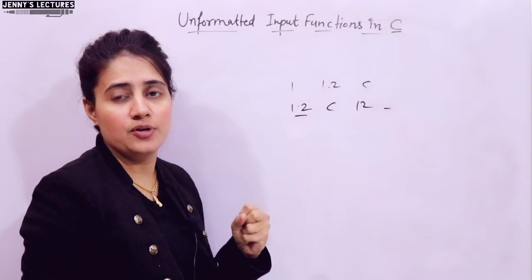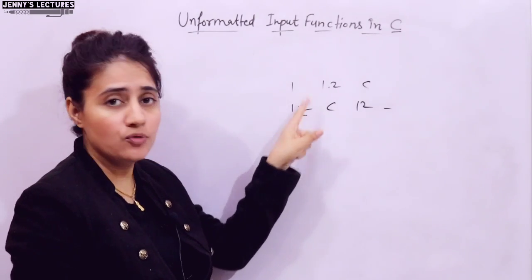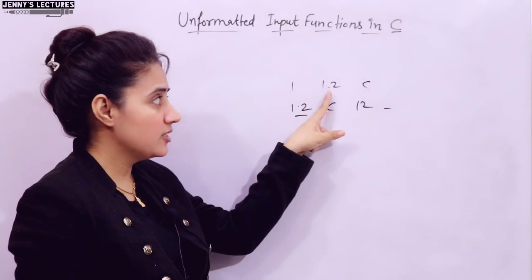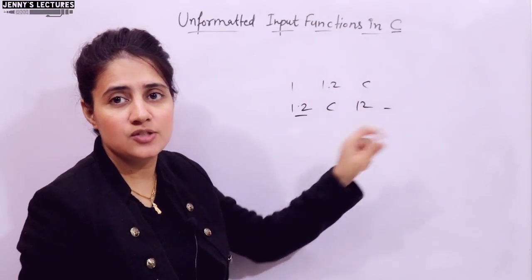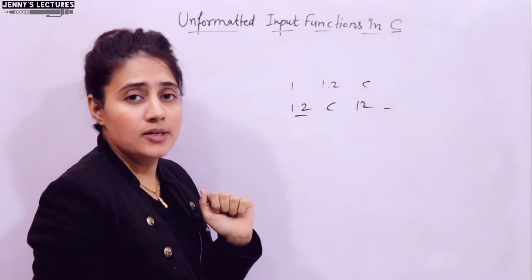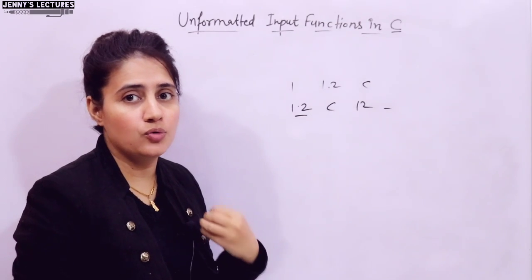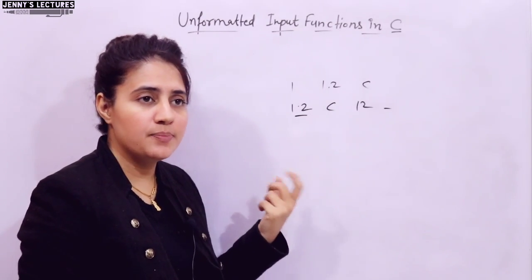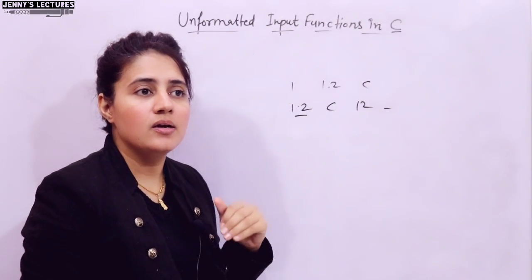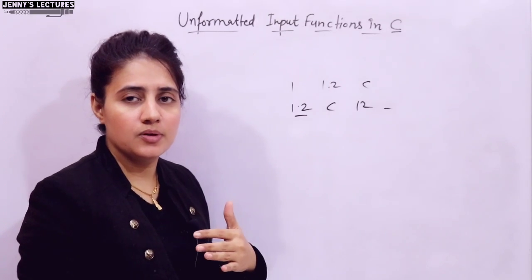This is a formatted type of input. You can format the input using format specifiers: %d for integer, %f for float, %c for character, %s for string. But in unformatted input functions you cannot format your data. Basically, unformatted input functions work on character data type — they can accept a single character only, or a string only.